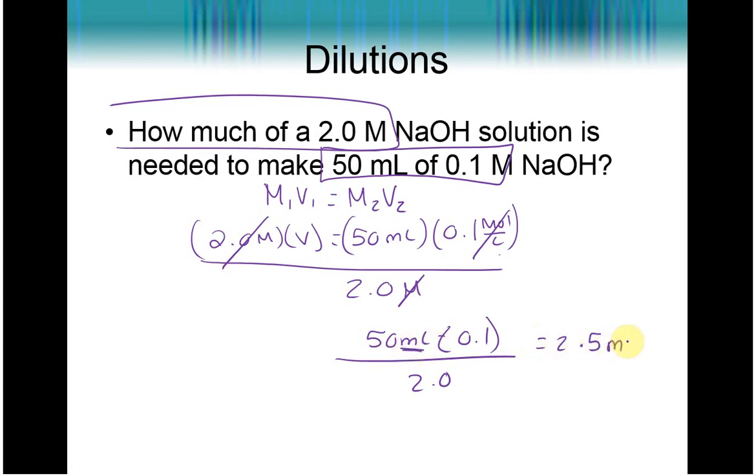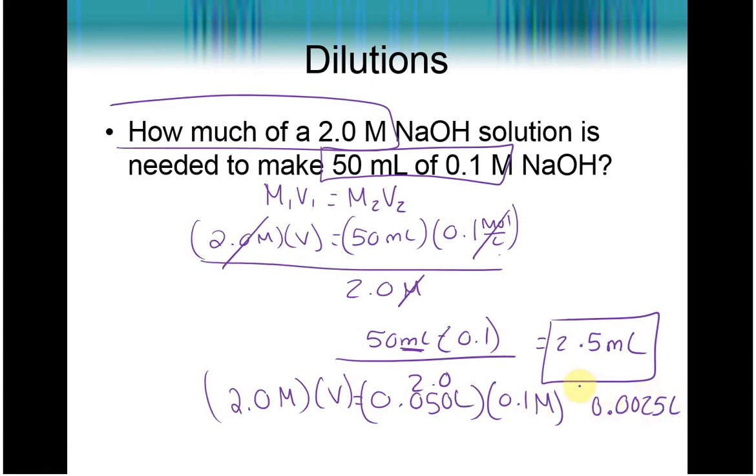And so you end up in your calculator getting 2.5. Our units are milliliters. So we can actually, for dilution calculations, only worry about using what we're given. If you really want to convert to liters, you can do that. You would have had instead 2.0 molarity times V is equal to 0.050 liters times 0.1 molar. Dividing out, you would have gotten 0.0025 liters of solution. Technically, for me, it's a time saver not to have to convert. So this is one situation, because it's the only one you really can do, where I take advantage and I don't convert.